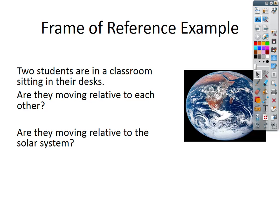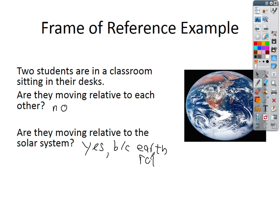Here are some examples. If you have two students sitting at desks, are they moving relative to each other? The answer would be no — they are not moving. But are they moving relative to the solar system? It's an abstract thought, but it's happening. Are you moving in the solar system right now? Yes, because the Earth is rotating around the sun. Technically, you're spinning in place, spinning around the center of the Earth the whole time, rotating around the sun. Frame of reference is your point of view — what you see happening might be different from what other people see.